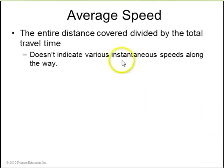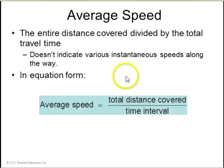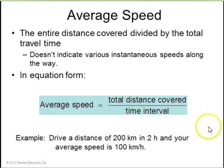Average speed, the entire distance covered divided by the total travel time. It doesn't indicate various instantaneous speeds along the way. So there's the equation for it. The example is, you drive a distance of 200 kilometers, and it takes you 2 hours. That means your average speed was 100 kilometers per hour. But you may have stopped for gas, and you may have been speeding a little bit on the freeway for part of it. So your instantaneous speed might have changed, but that's your average speed.